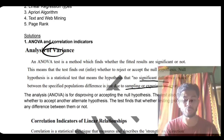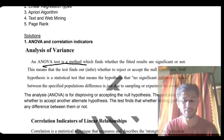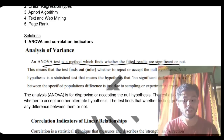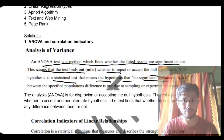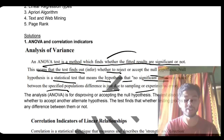So the first point you will write is: ANOVA is a test method that finds whether the fitted results are significant or not. This means the test finds out whether to reject or accept the null hypothesis. It is a statistical test where the hypothesis states there is no significant difference — it's just a difference due to sampling or experimental error.